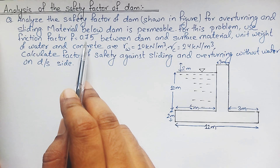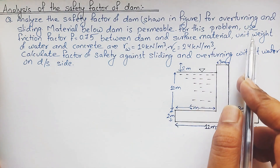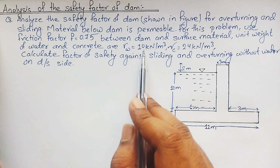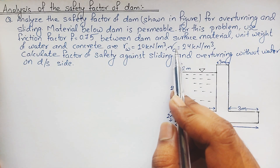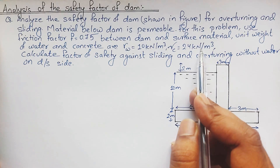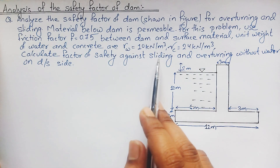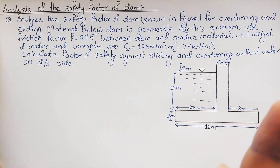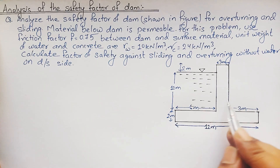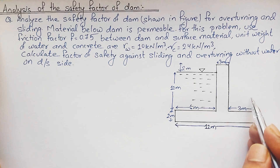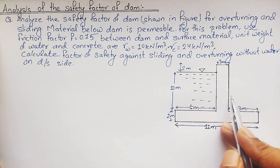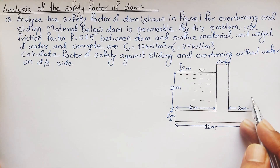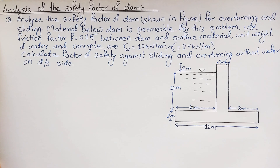For this problem, the friction factor is given as f = 0.75 between the dam and the surface material. The unit weight of water, γ_w = 10 kN/m³, and the unit weight of concrete = 24 kN/m³. We are asked to calculate the factor of safety against sliding and overturning without water on the downstream side — this is Case 1.